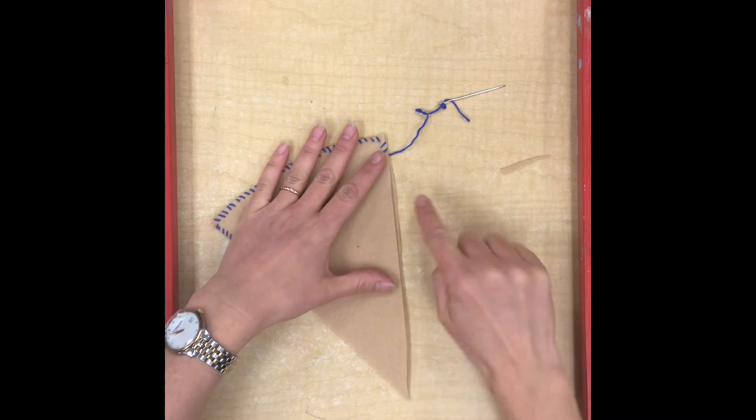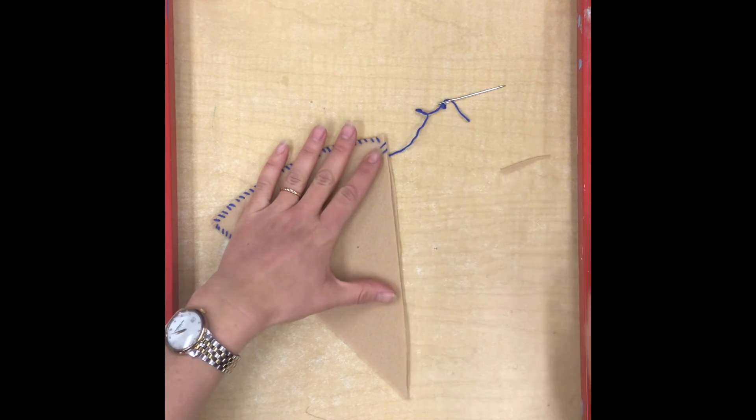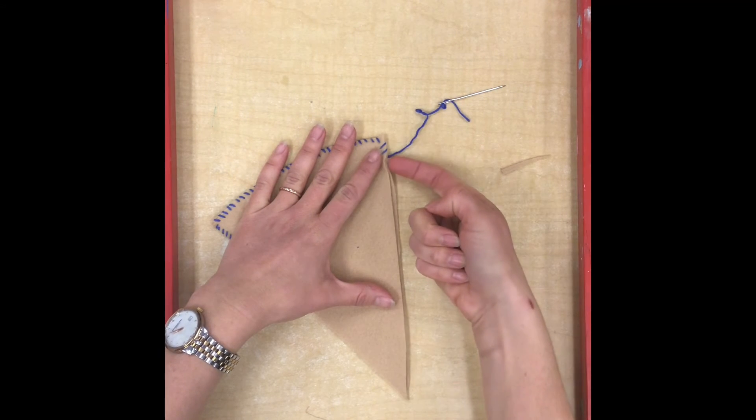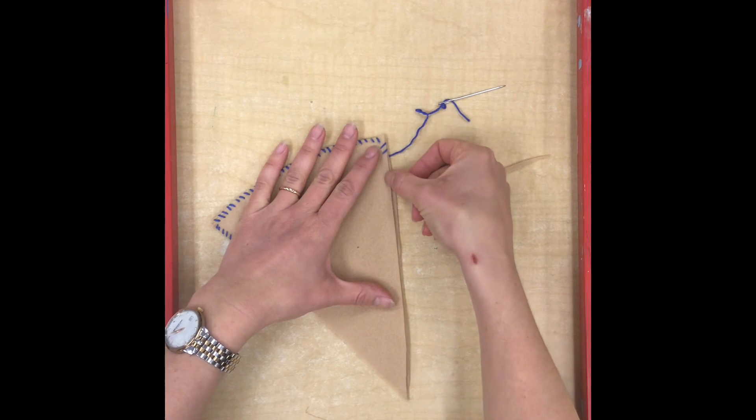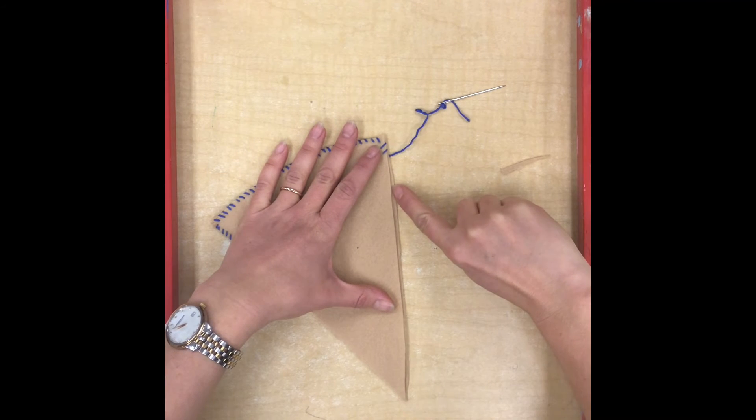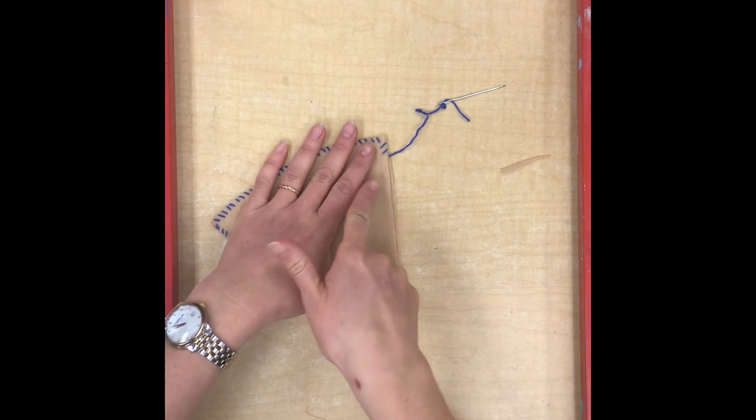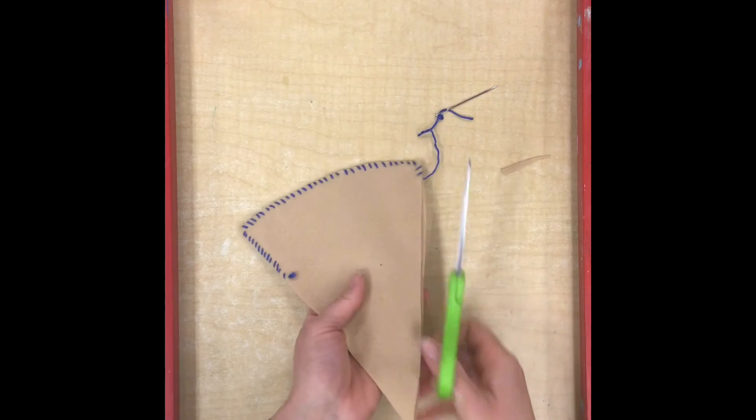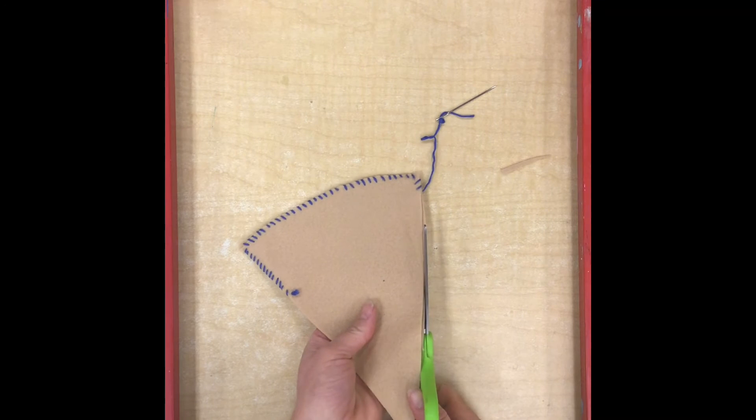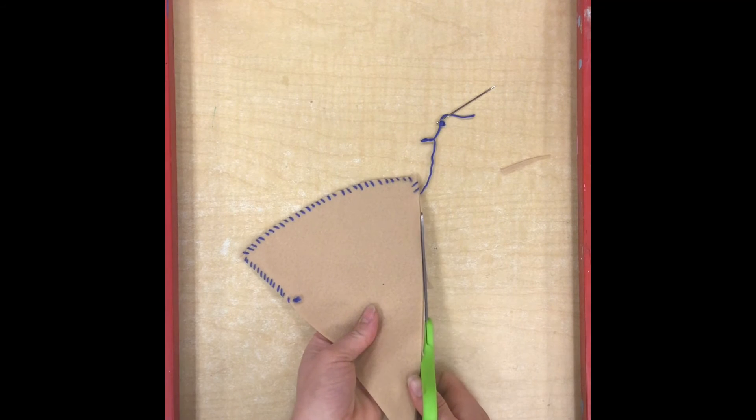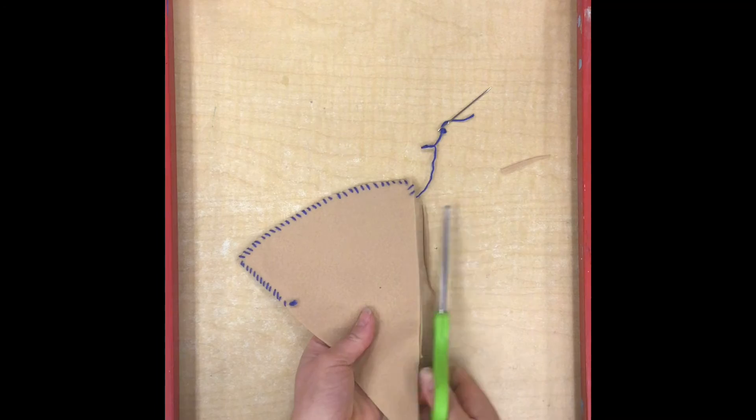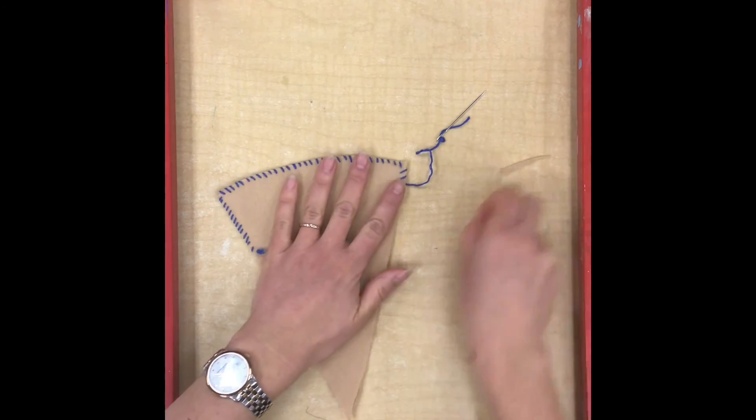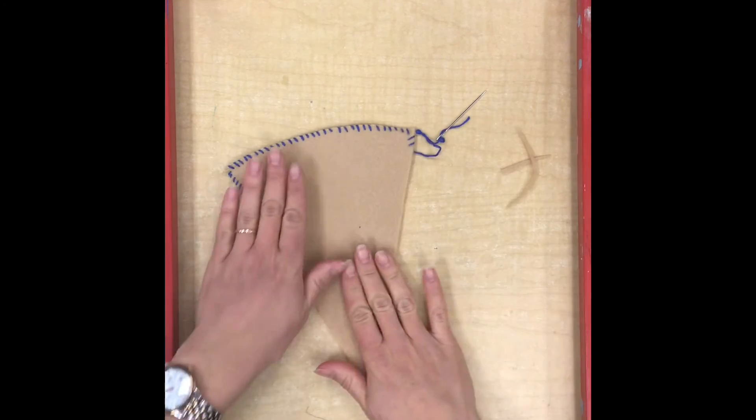So right here you might be able to see the front piece of mine is a little bit bigger, so I'm going to have to pay really close attention through here as I'm making these stitches that I'm not just going through the front piece, I'm getting the back piece as well. If you want to problem solve that you can very carefully trim your pieces a little bit to make them more the same size, but just be careful that you don't end up cutting off too much.